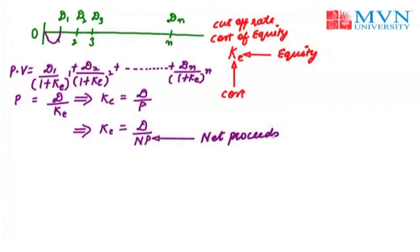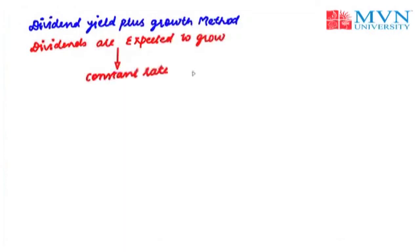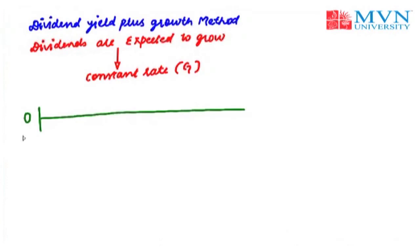Now moving towards the second method, which is the dividend yield plus growth method. In this method, the dividends of a firm are expected to grow at a constant rate. Let us suppose the constant rate of growth is denoted as g. We can easily find out the cost of equity by using a timeline. Let us suppose in the current year, that is at time 0, the investor is earning dividends, which I am denoting as d0.